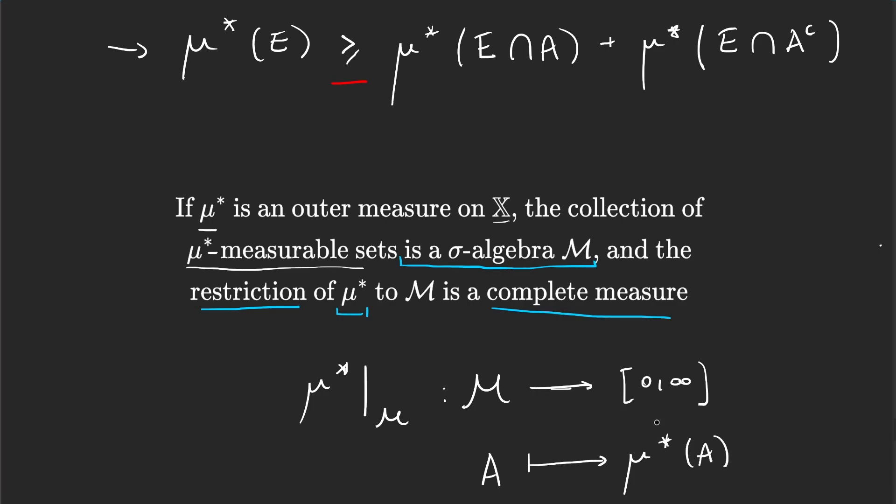So it's the same outer measure we had, but we're not going to look at it over parts of X because that set is way too big. We are only going to focus on the μ* measurable sets which form a σ-algebra. But what this is telling us is this restriction is a measure, and call it μ. So it's amazing because measures were very complicated, σ-algebras were very complicated, and we found an easy way to create our outer measures and now we found another easy way to create measures from outer measures.